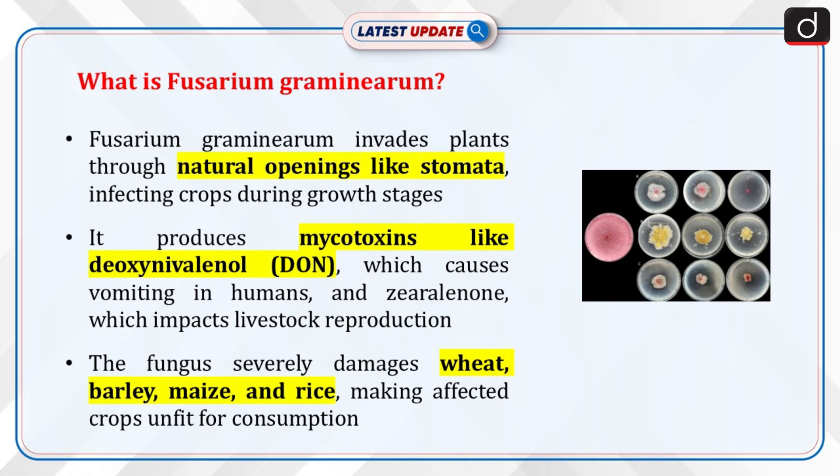Fusarium graminearum is a fungal pathogen that invades plants through natural openings like stomata, infecting critical crops during their growth stages. The fungus produces mycotoxins such as deoxynivalenol (DON), which induces vomiting in humans, and zearalenone, which affects livestock reproduction. This fungus causes significant damage to wheat, barley, maize, and rice.